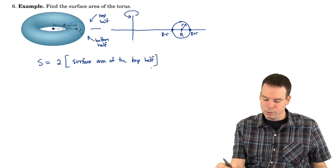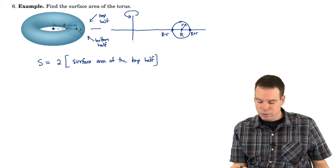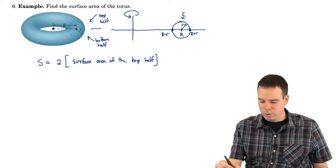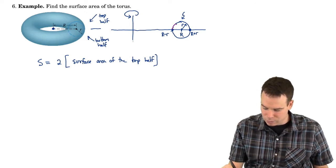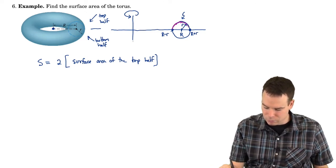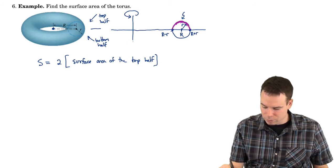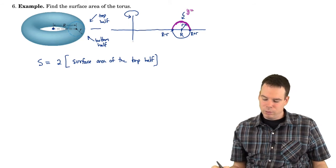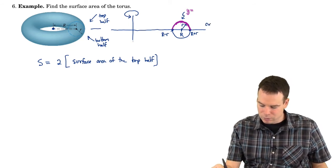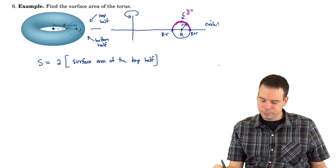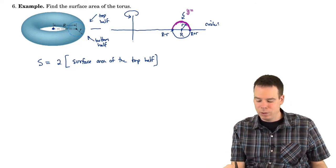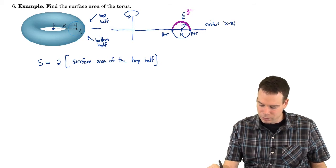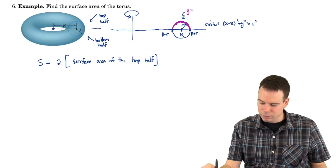So we're going to say the surface area is twice the surface area of the top half. Now I just need to focus on that upper curve and revolving it around. So I need to have is a description for that upper curve. The upper curve is this purple curve. That's the one I'm going to look at revolving. Well, it might help to start with the full circle. This is a circle that's been translated capital R units to the right. So it's (x - R)² + y² = r².